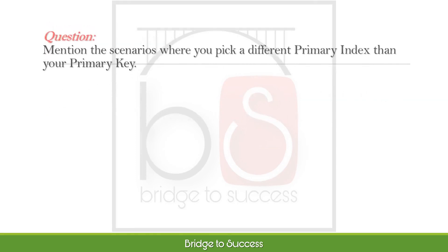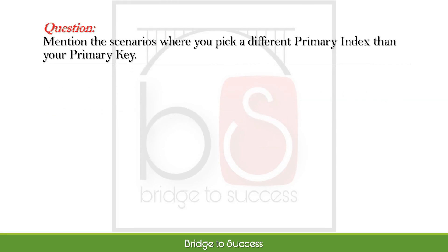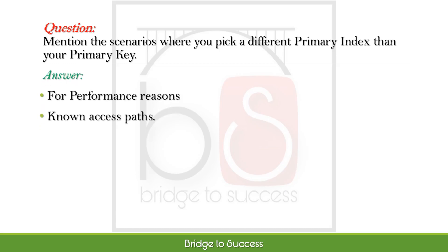Mention the scenarios where you pick a different primary index than your primary key. For performance reasons. The second scenario is if we know that the PI column is more commonly used than the primary key column.